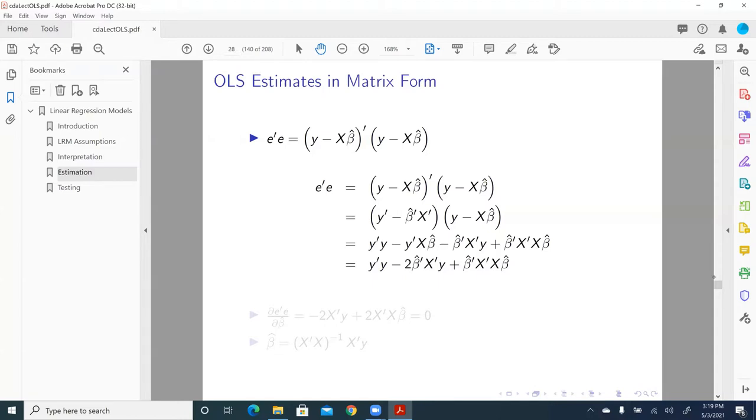Y and X are known, and the only unknown quantity, which is supposed to be a column vector, is beta hat. So we get this minimization or loss function. We take its partial derivative with respect to beta hat, and we get negative 2 X prime Y plus 2 X prime X beta hat equal to 0. Solve for this equation, we get beta hat equal to X prime X inverse X prime Y. That is a very commonly known result for OLS regression.